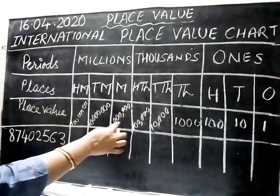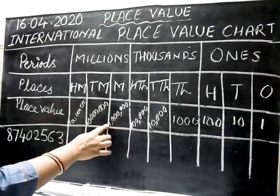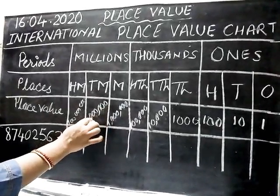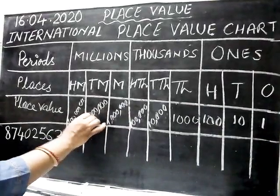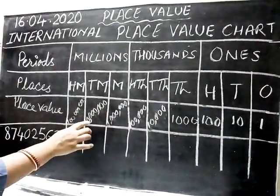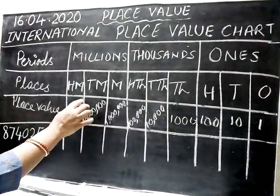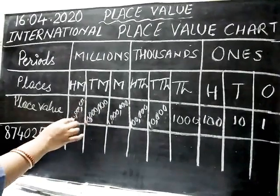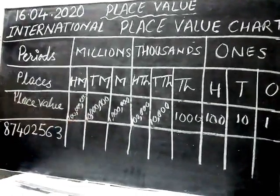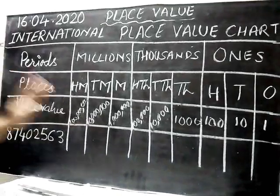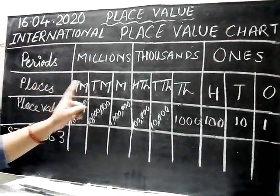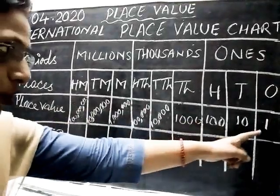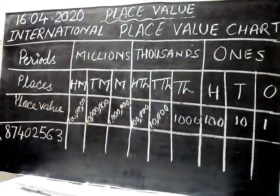So in the international place value chart the pattern is: ones, tens, hundreds — comma — thousands, ten thousands, hundred thousands — comma — million, ten million. For hundred million there will be one more digit, making it a 9-digit number. In the international place value chart, when we mark the period it is easy to remember because every period has three places. But in the Indian system, the thousands period has only two places, and there is no million.